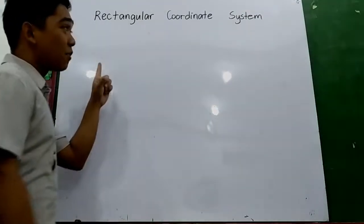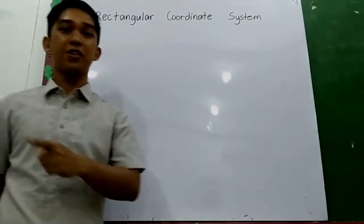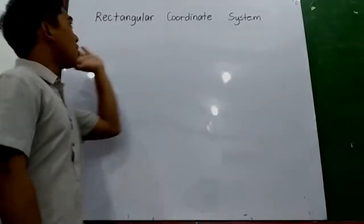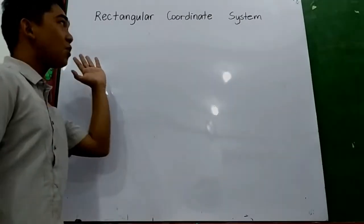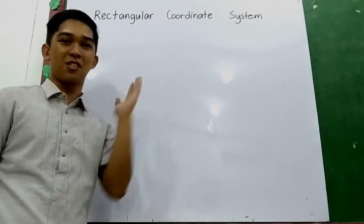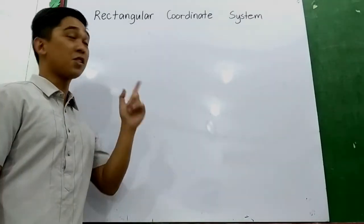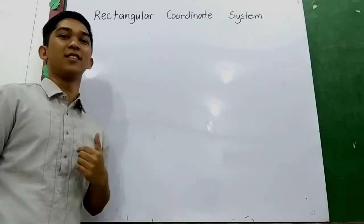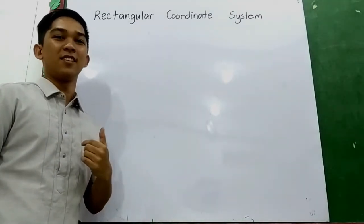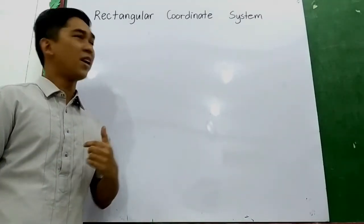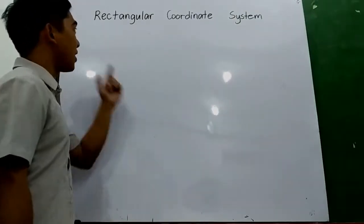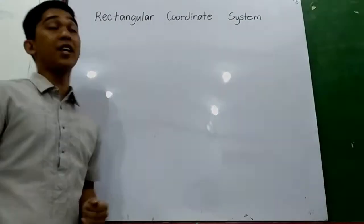Our first lesson for the third quarter is the rectangular coordinate system. This lesson is for Grade 10. So let us recall the rectangular coordinate system.